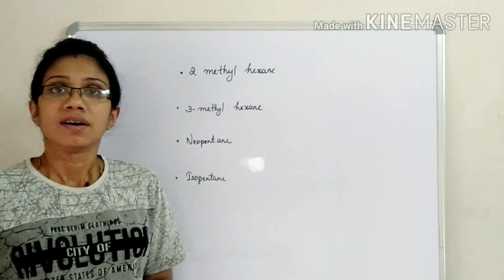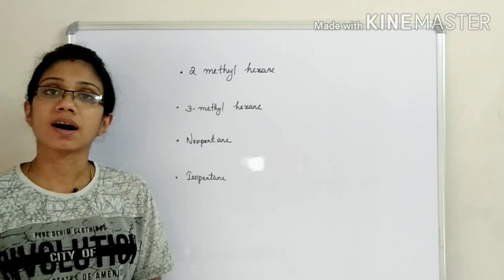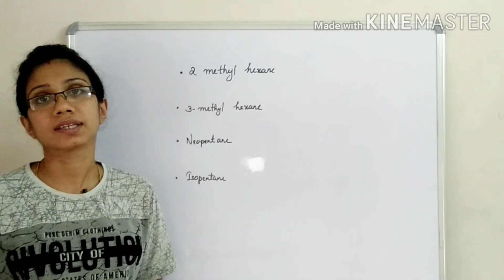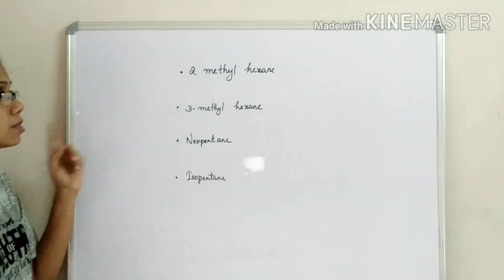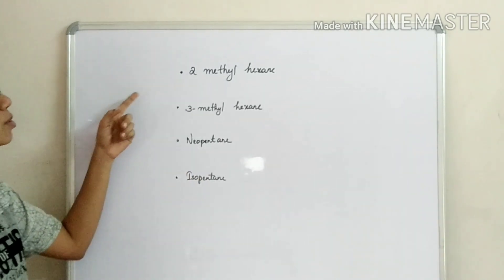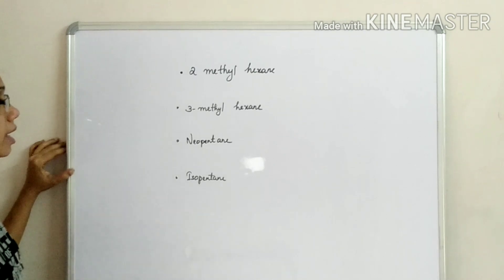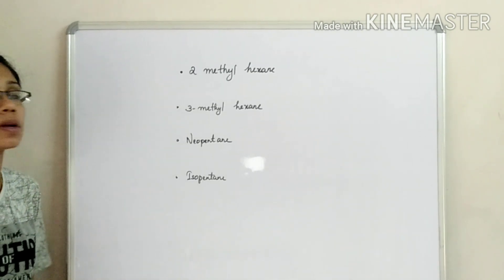First question: which of the following will exhibit chirality? The options are: first option, 2-methylhexane; 3-methylhexane; neopentane; isopentane.